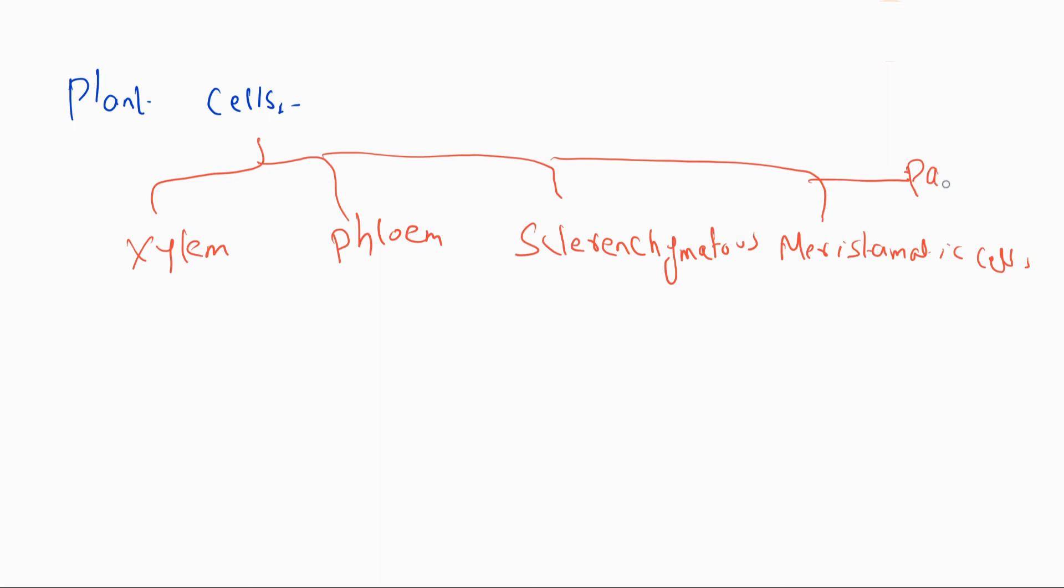When I talk about human beings or animal cells, I have given you some examples. Now for plant cells, different types of plant cells are also present: xylem, phloem, sclerenchymatous, meristematic cells, and parenchymatous cells. First, xylem cells conduct water and minerals to the aerial part of the plant.